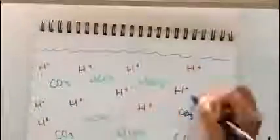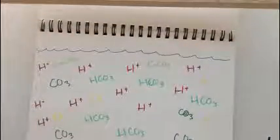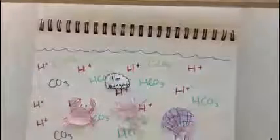However, because of the abundance of hydrogen ions, carbonate is bonding with hydrogen to make bicarbonate instead of forming with calcium ions to make calcium carbonate. This then reduces the availability of calcium carbonate in the ocean.